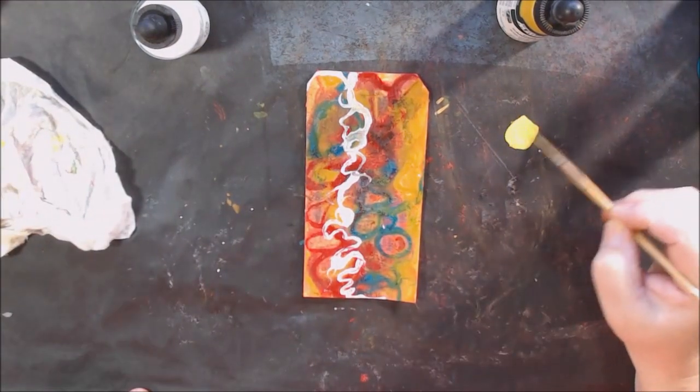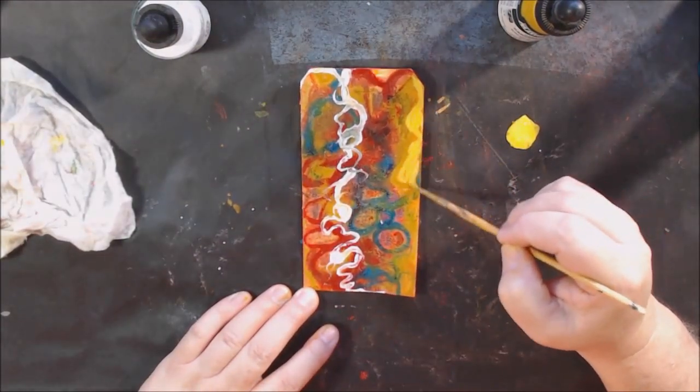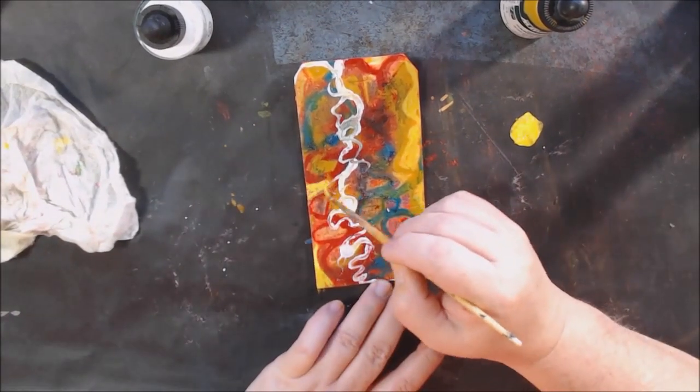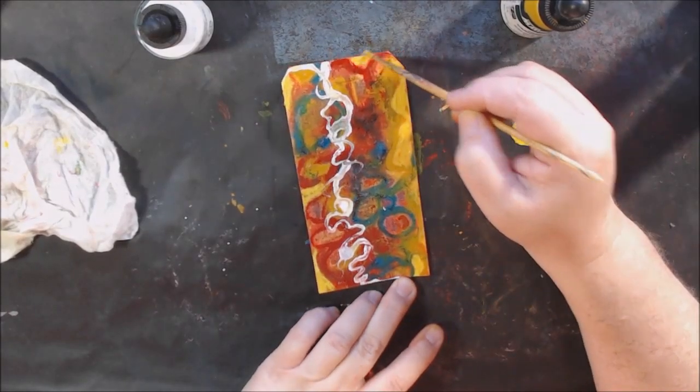So I mixed some of that yellow color and then the white together and with a brush added some of that onto the tag just because it was looking so dark and gloomy.